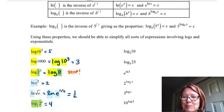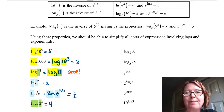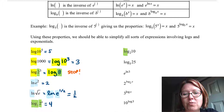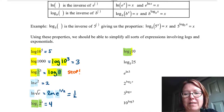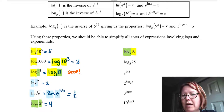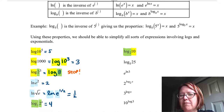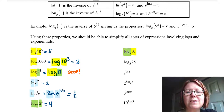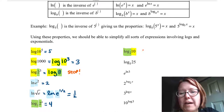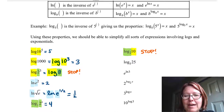The next expression is log base 2 of 10. Log base 2 is base 2 and 10 is base 10 — those do not match. The only thing we could rewrite 10 as would be 10 to the 1st, and that's still not going to match. So if these don't match we have to stop — there's nothing to simplify.